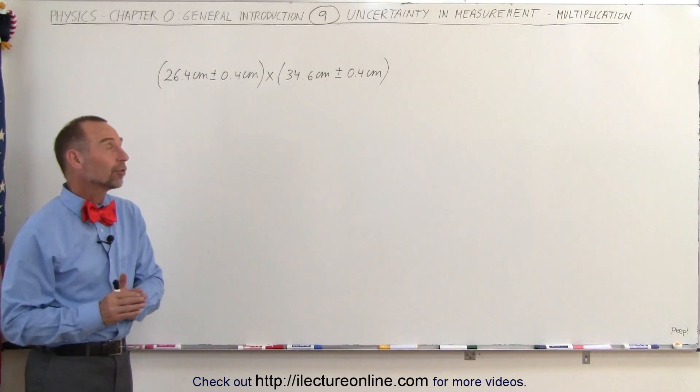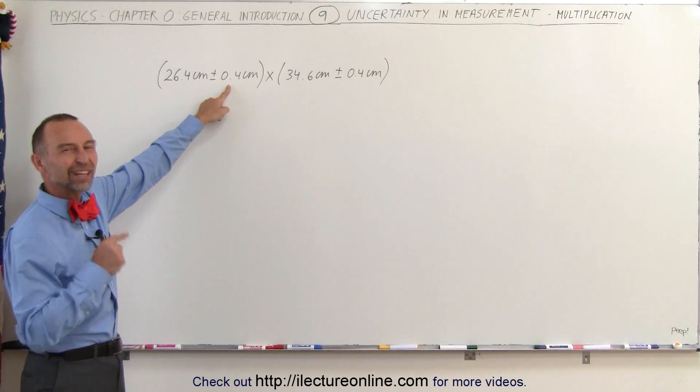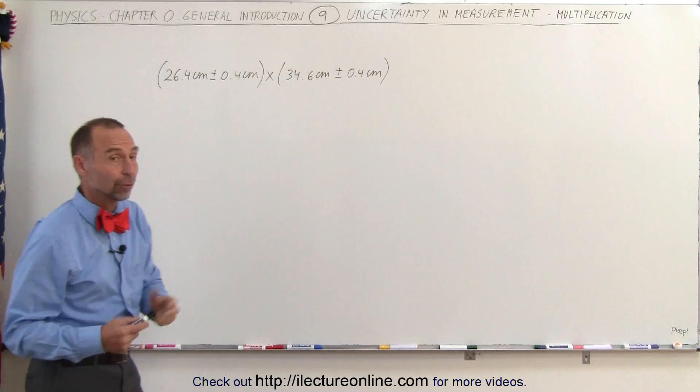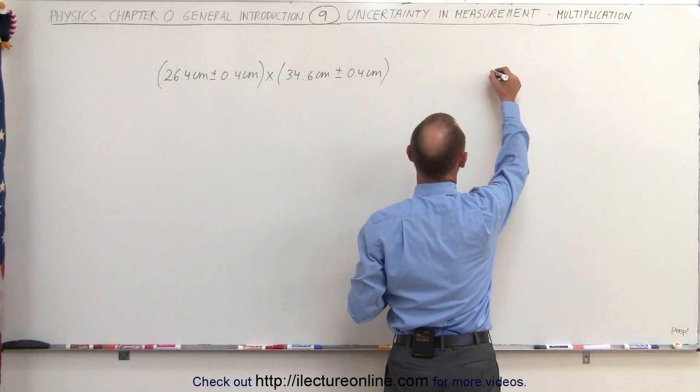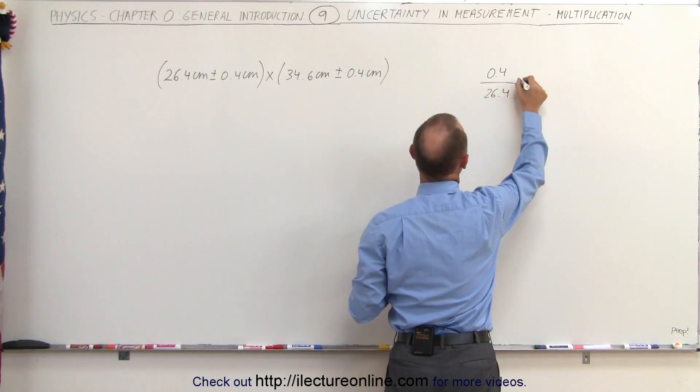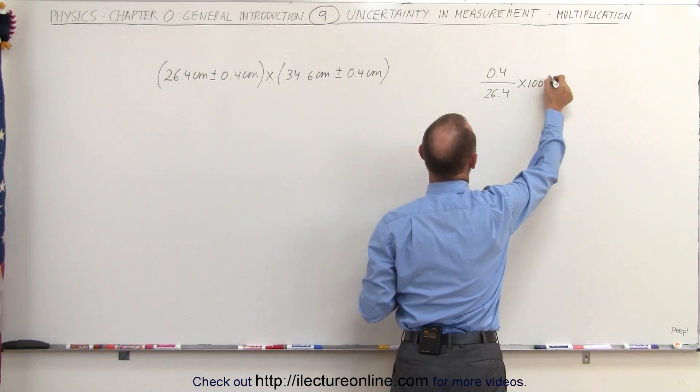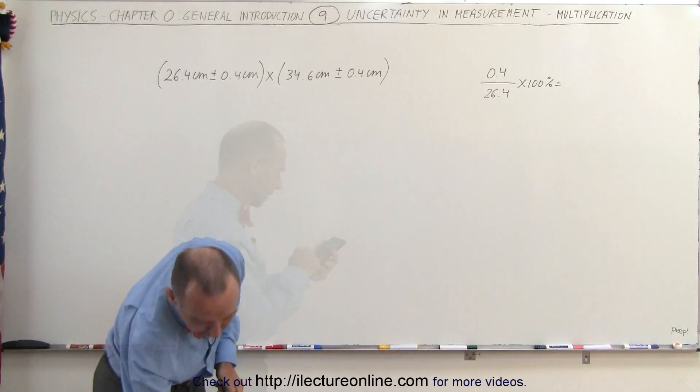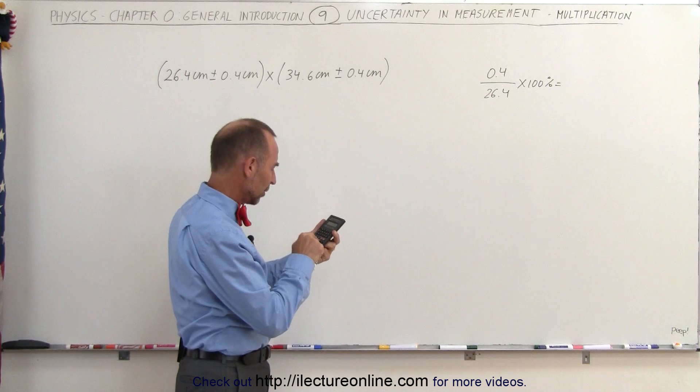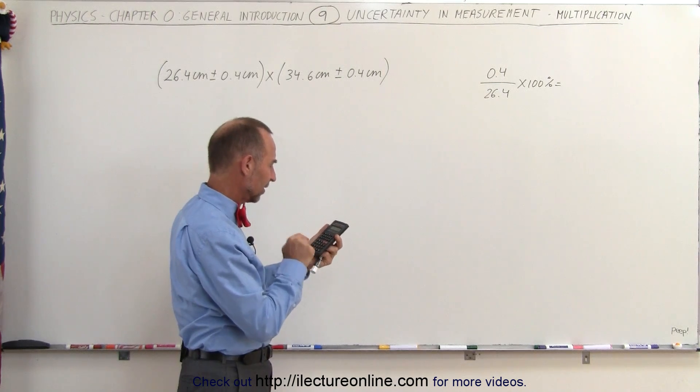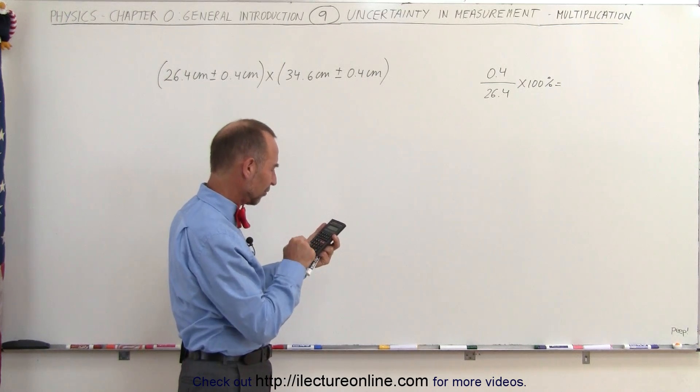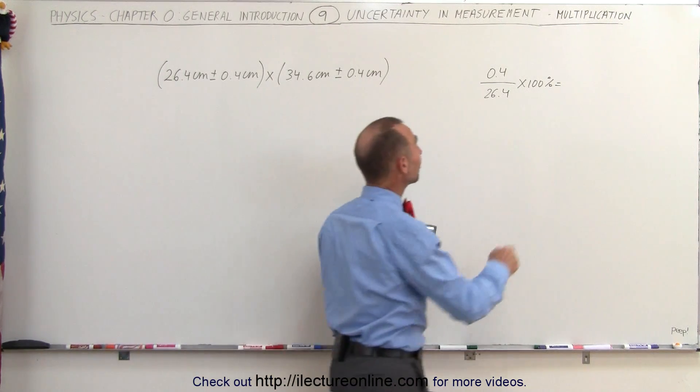What we need to do first is take these uncertainties and convert them to percentages. What percentage is 0.4 of 26.4? What we do here is take 0.4 divided by 26.4 and multiply times 100 percent. Using a calculator, 0.4 divided by 26.4 times 100 percent, we get—let me try that again—it's about 1.5 percent.